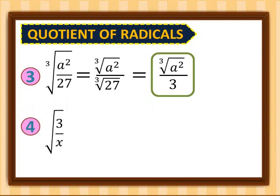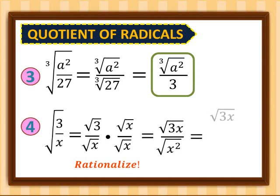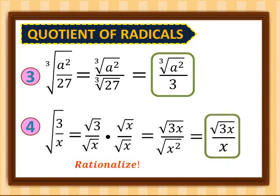Number 4: square root of 3 over x. We separate this to get square root of 3 over square root of x. Since we cannot leave the radical in the denominator, we rationalize by multiplying by square root of x over square root of x. So 3 times x gives us square root of 3x, and x times x gives us square root of x squared, which equals x. So for number 4, we have square root of 3x over x.